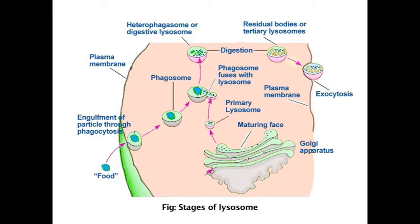Lysosomes pass through various stages in cells and this phenomenon is called polymorphism, or existence of more than one morphological form. Lysosomes can take four different forms depending on their morphology and functions. Primary lysosomes or storage granules: it is a small body whose enzymatic content is synthesized by the ribosomes and accumulated in the endoplasmic reticulum, followed by transfer into the Golgi complex before finally being pinched off from the maturing phase. These lysosome bodies contain hydrolytic enzymes in the form of granules.